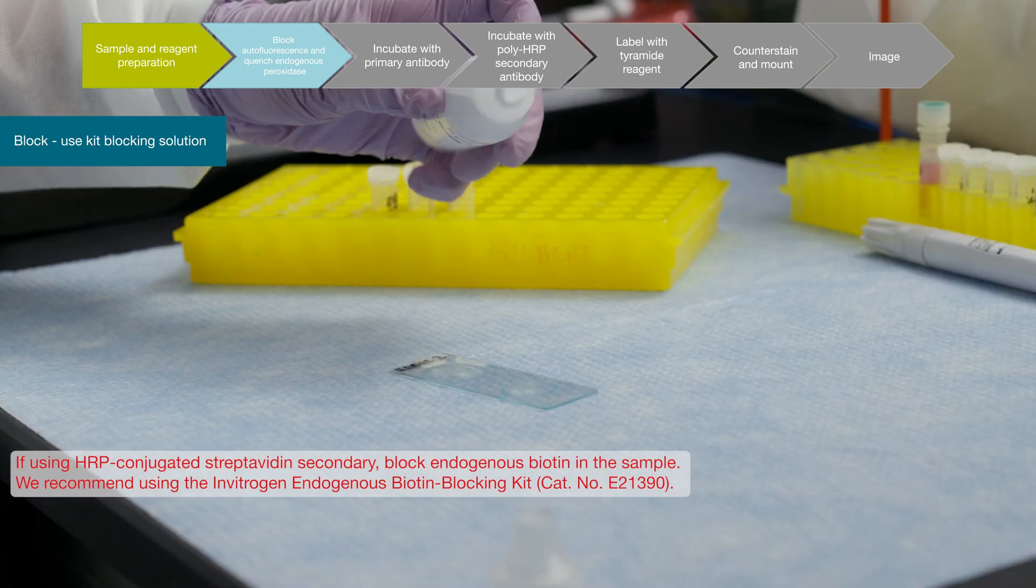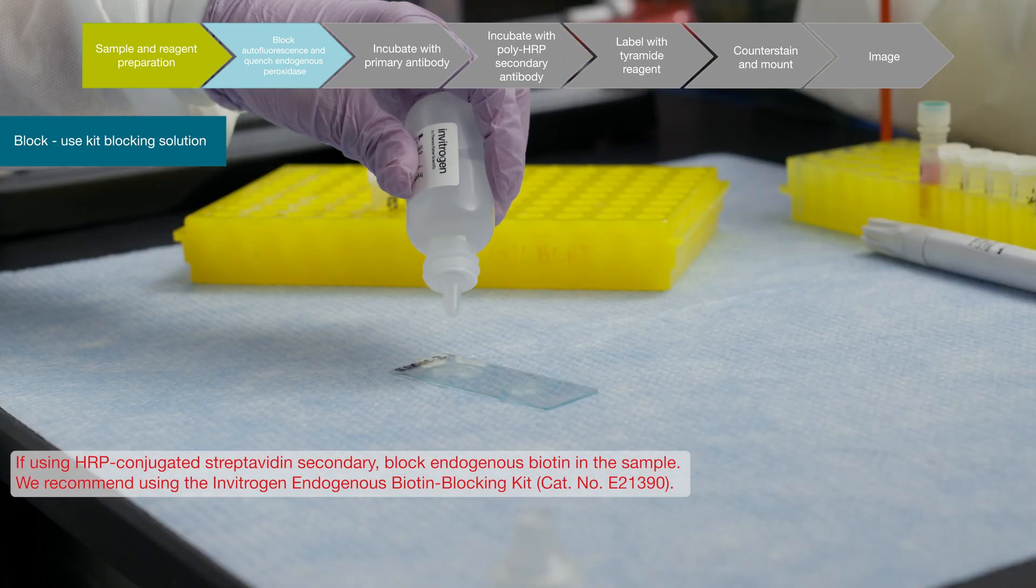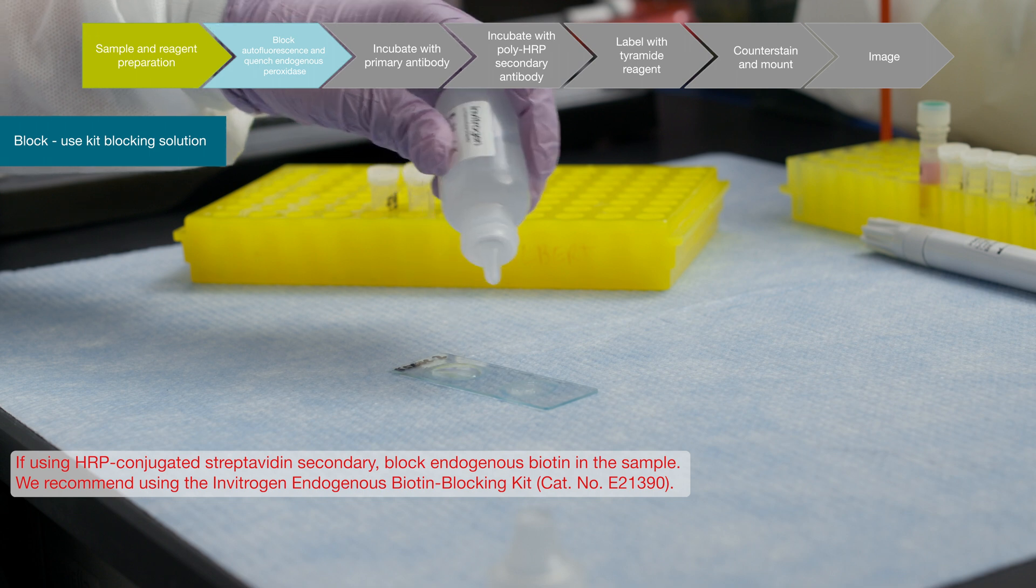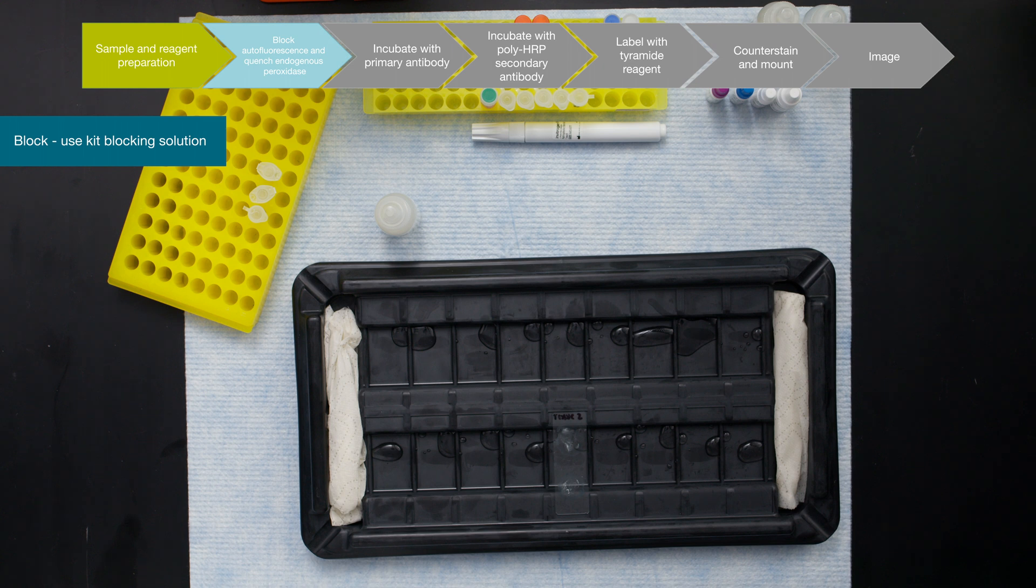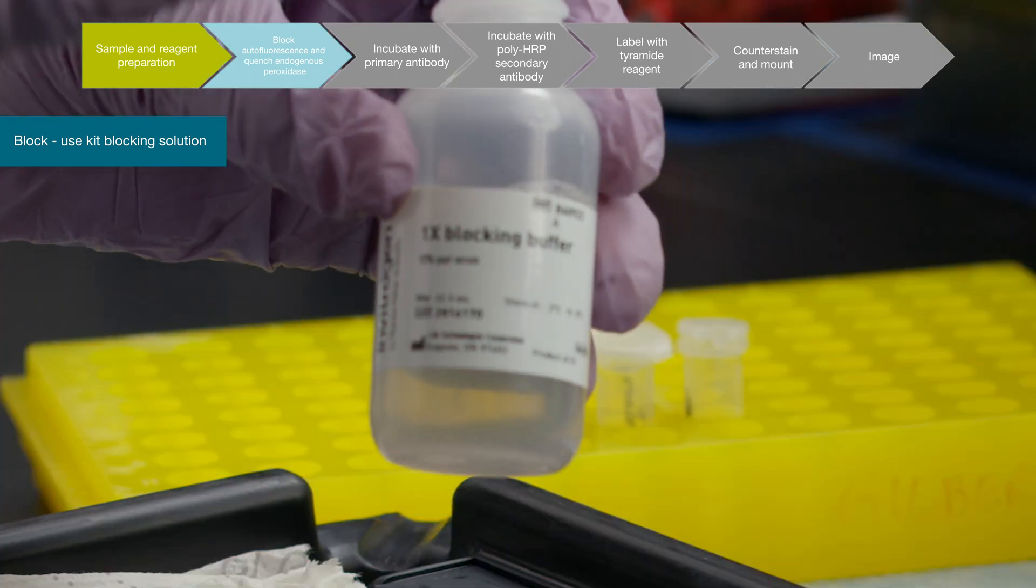Since Tyramide amplification requires using an HRP enzyme, it is mandatory to quench the endogenous peroxidase activity of the sample. Afterwards, block the samples for non-specific binding using the provided blocking buffer.